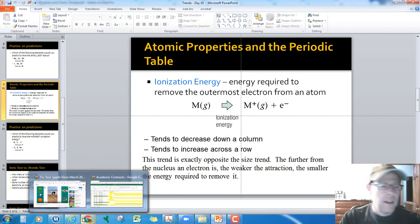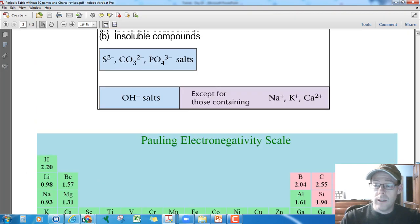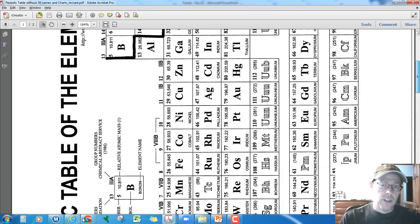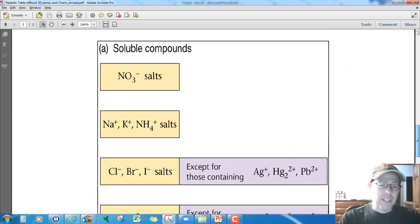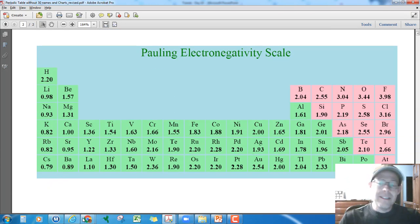One other thing. So the back of the periodic tables you got from me at the beginning of the year, periodic tables that are on our tables, you can actually access this periodic table on Moodle as well. On the back, we did solubility rules last fall, and then we have another trend, which is called the electronegativity scale.